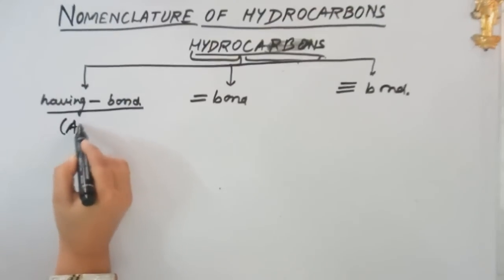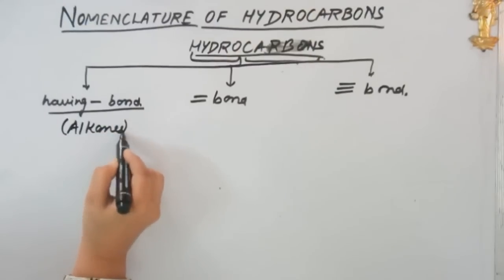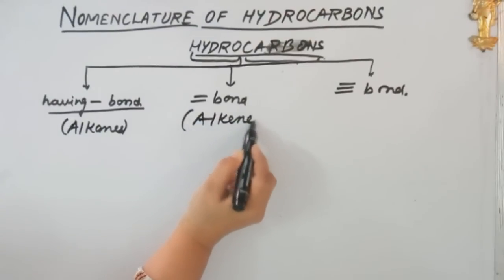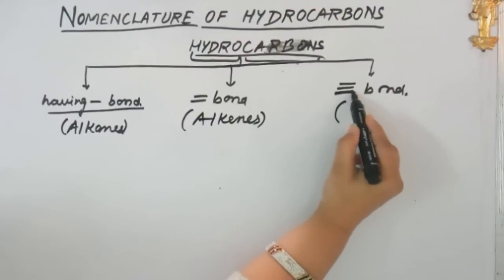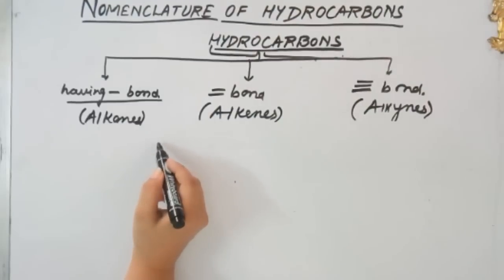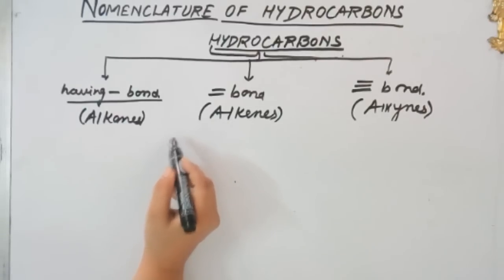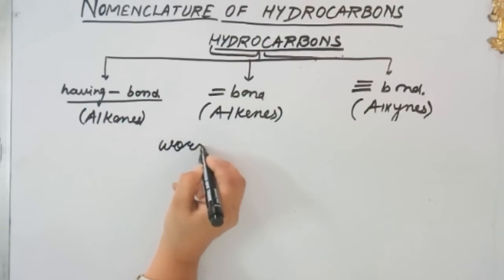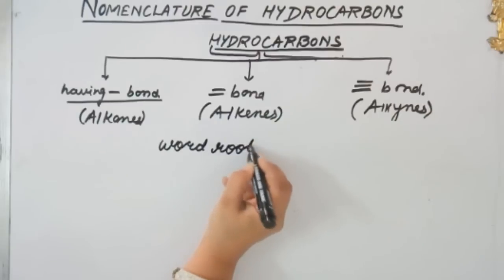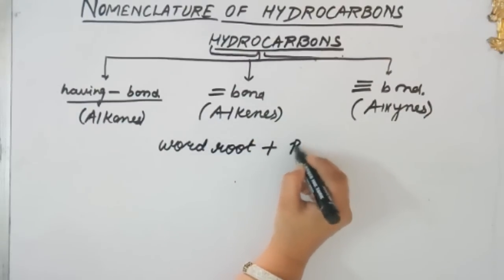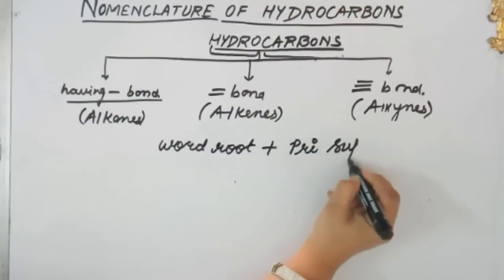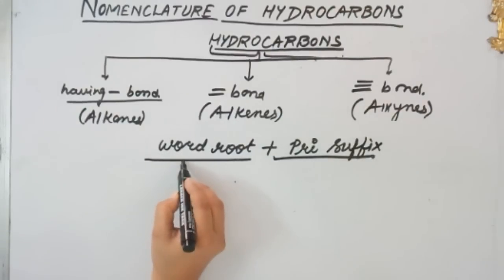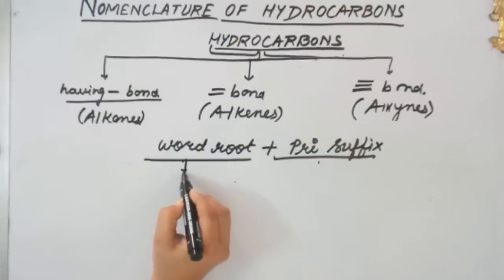Compounds having a single bond are known as alkanes. Now I'm going to start the naming of hydrocarbons — very simple and consisting of only two parts. The first part we start with is the word root, which is further added to the primary suffix.